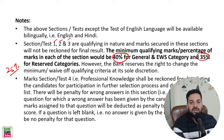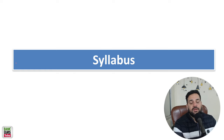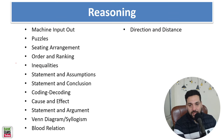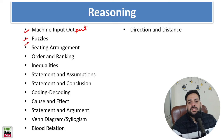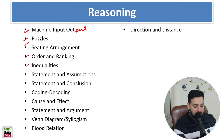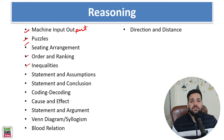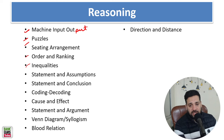In the Reasoning Ability section, machine input-output is very important, along with puzzles, seating arrangement, order and ranking, and inequalities. There will be a maximum of one puzzle and one seating arrangement question.